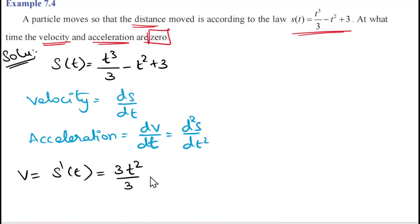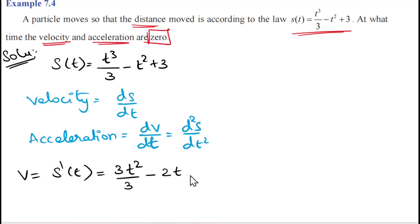Differentiating s(t) = t³/3 - t² + 3: the derivative of t³/3 is t², the derivative of t² is 2t, and the constant 3 differentiates to 0. So velocity v = t² - 2t.